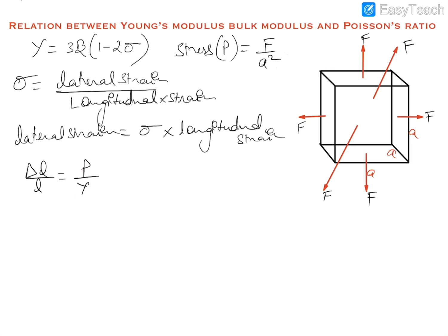But if we are also applying this force in Y and Z directions, then considering the Y direction, this force will expand the cube in the Y direction. Due to this expansion in Y, a lateral strain would also be produced in the X direction. If the cube is expanding in Y, it would be contracting in X due to lateral strain. So we must include this contraction in the term — the net delta L would be the longitudinal expansion due to the force along X, minus the lateral compression because the force in Y expands along Y but contracts along X.